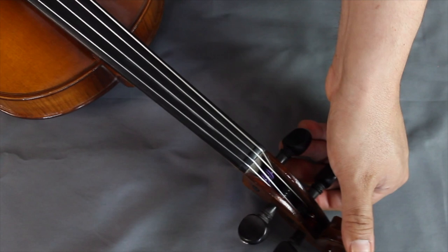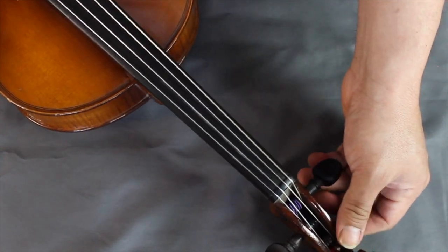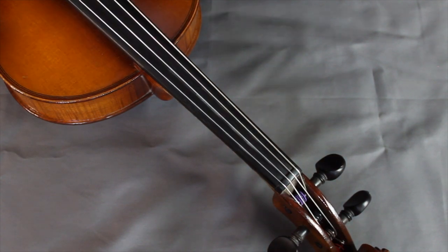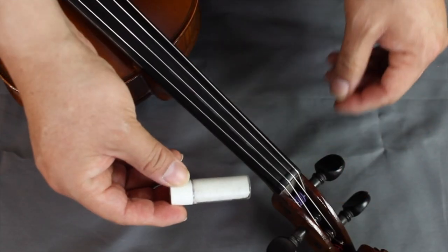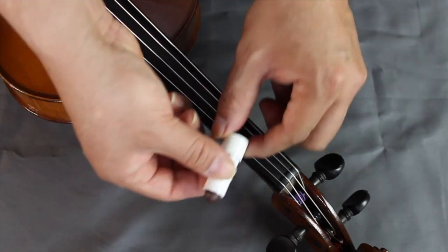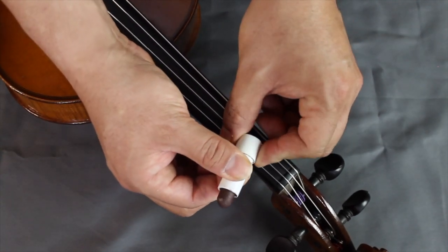And the way you fix that is by applying something that we call peg compound. I will leave a link in the description for you to be able to find it. Most of the time I see it going for maybe about seven dollars, eight dollars. This is your usual peg compound. It looks a lot like lipstick. The dispenser works just like lipstick.